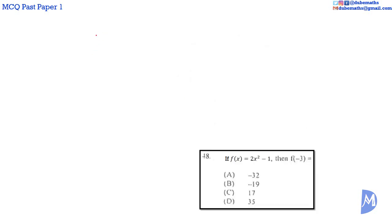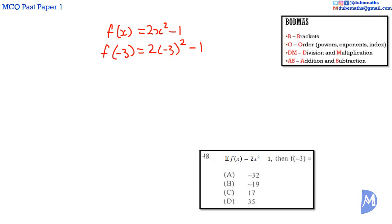Question 48. F of X is equal to 2X squared minus 1. F of negative 3 is equal to 2 of negative 3 squared minus 1. Remember board maths. We do powers before we do multiplication.